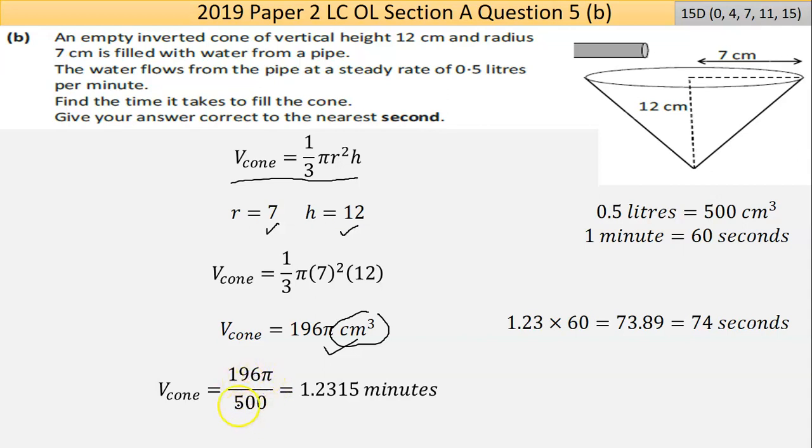196π divided by 500 is equivalent to a little over 1.2 minutes. Now they want the answer in seconds, so I need to convert that. There are 60 seconds in a minute, so it's that number times 60, which gives me 73.89 seconds. To the nearest second, I round this up, so it's 74 seconds.